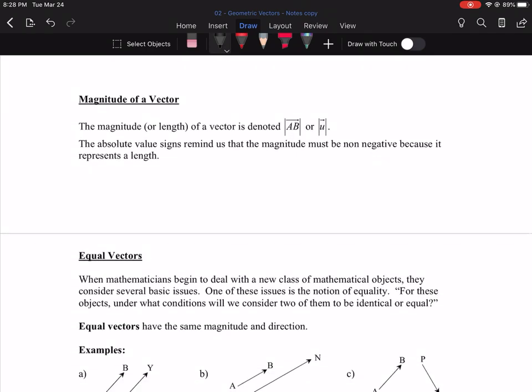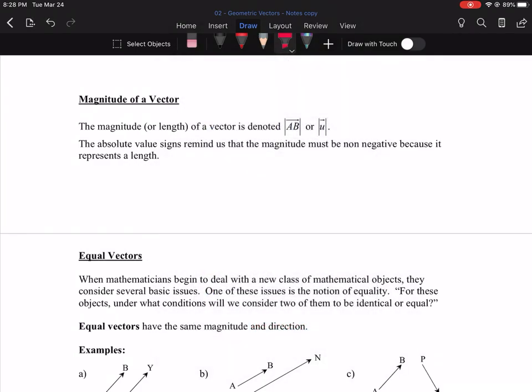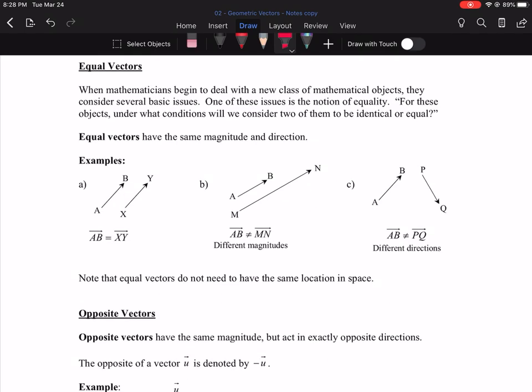So magnitude of a vector, another important concept. The magnitude of a vector is indicated by these absolute value bars. And the absolute value bars indicate, I just want to know how long the vector is.